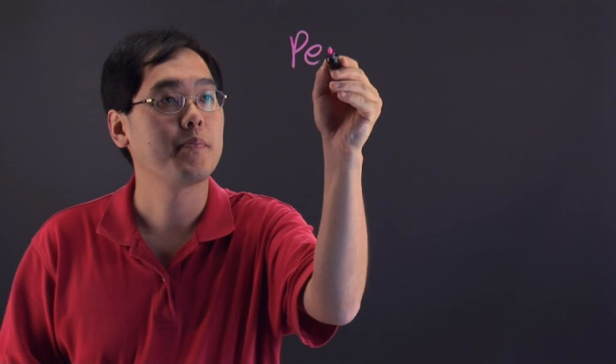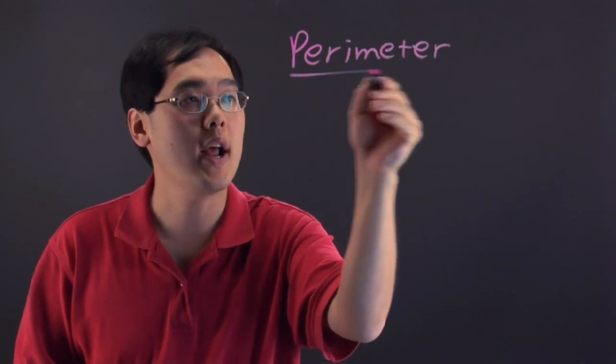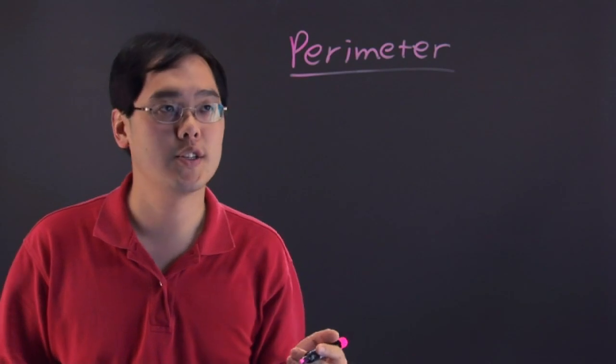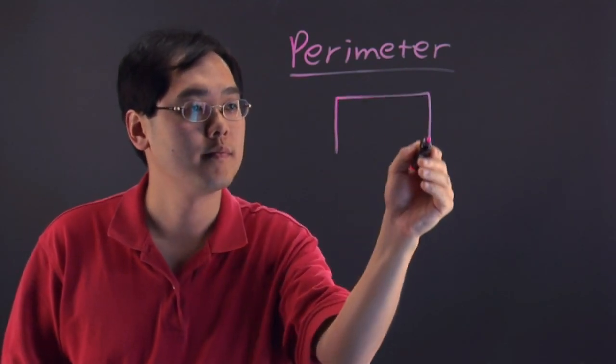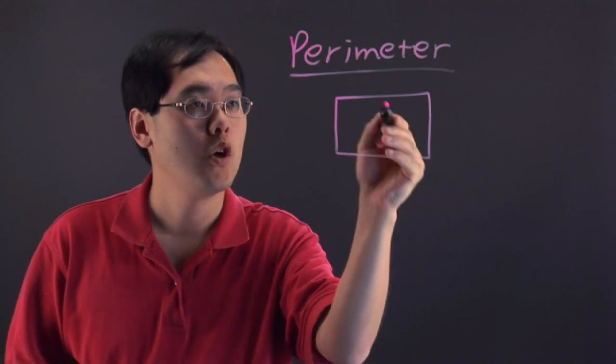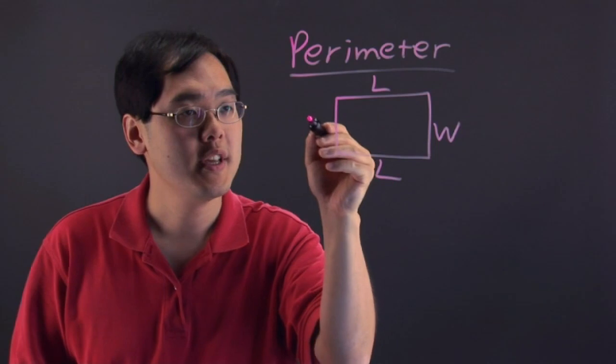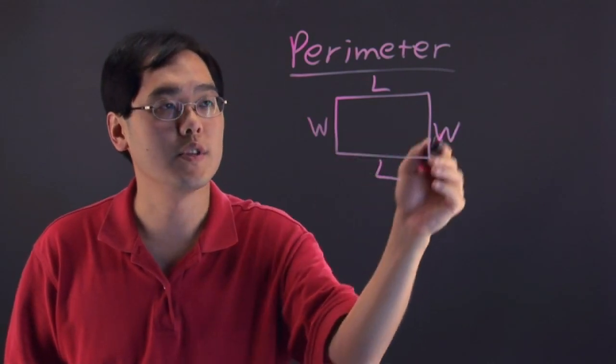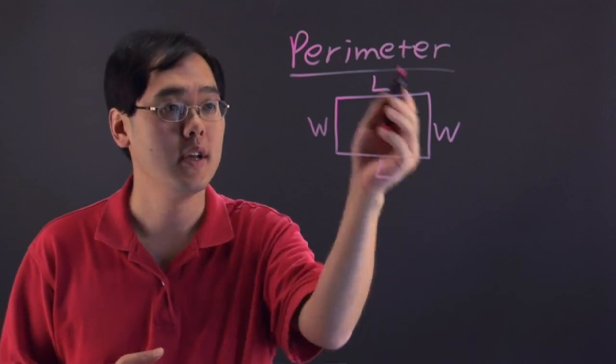Now with perimeter, we're often talking about the distance around a two-dimensional object. So for example, if you have a rectangle, we're talking about, in terms of perimeter, the distance around the rectangle. So that's what perimeter is, the distance around a particular shape.